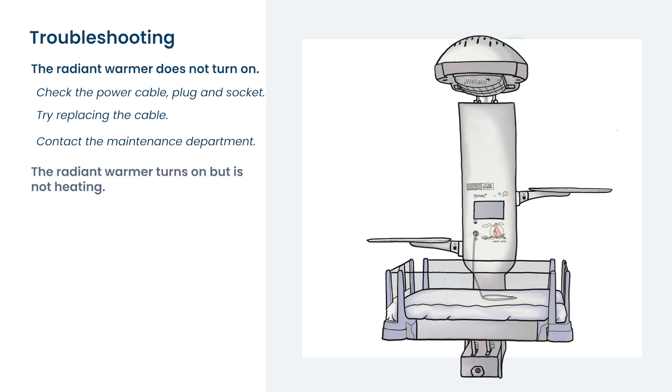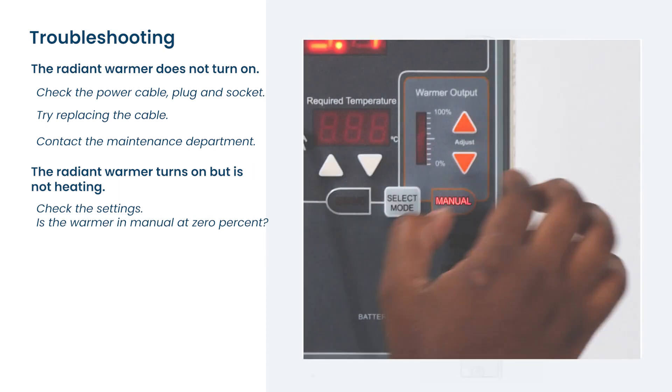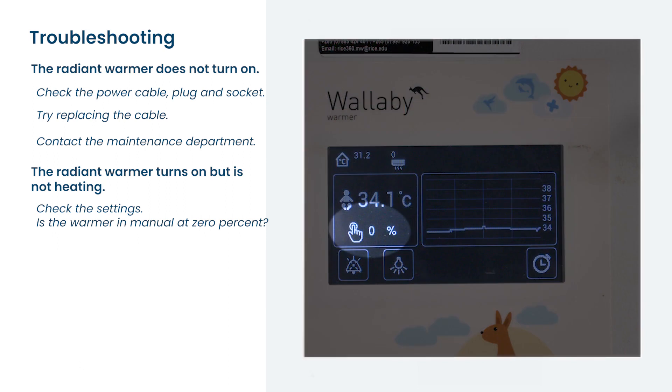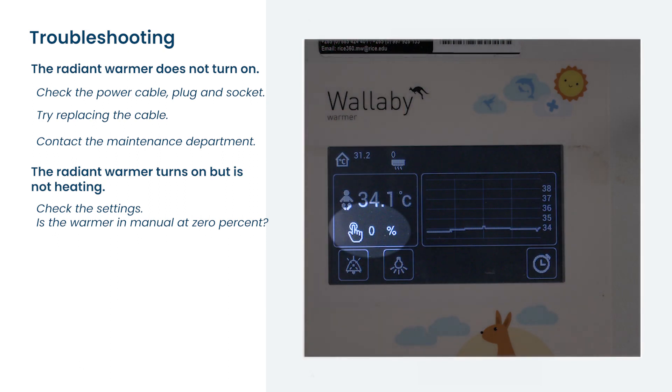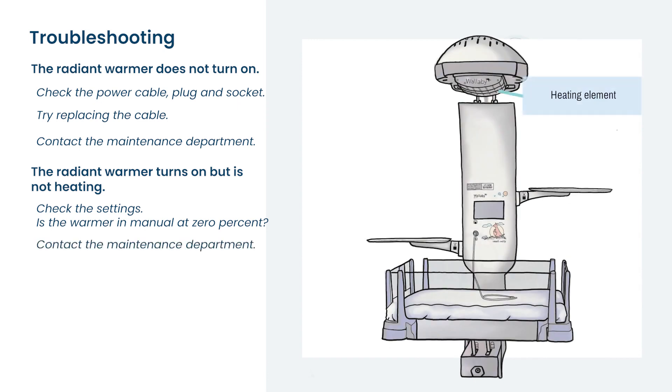If the radiant warmer turns on but you are getting no heat from the heating elements at the top of the machine, first of all check the settings. Make sure that you are not in manual with the output set at 0%. If the settings are correct, then it might be there is a problem with the heating elements. Contact your maintenance department.